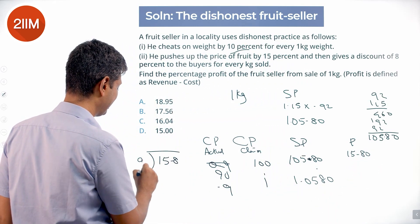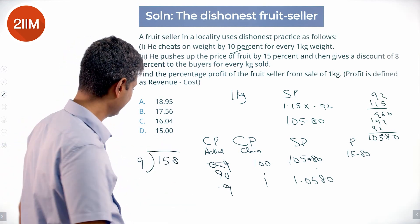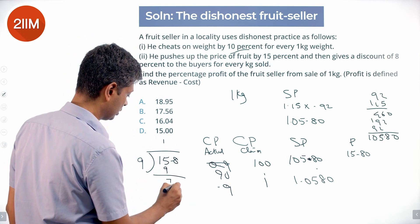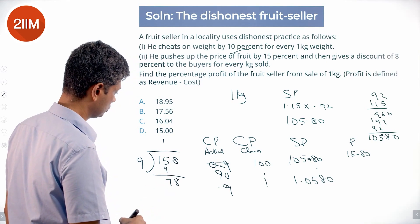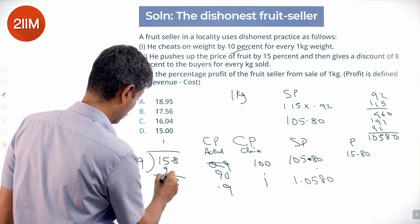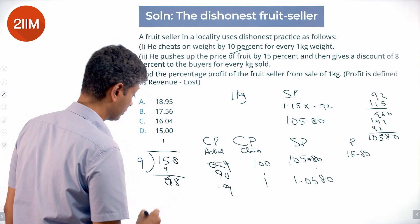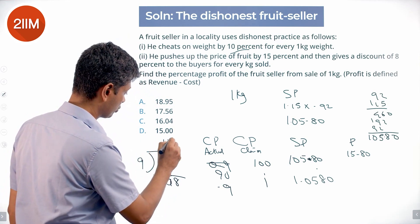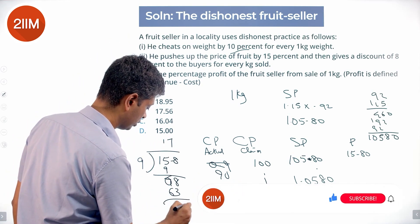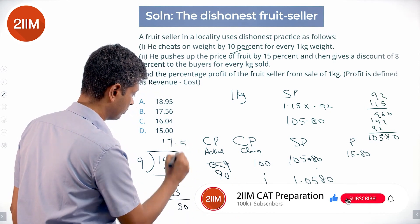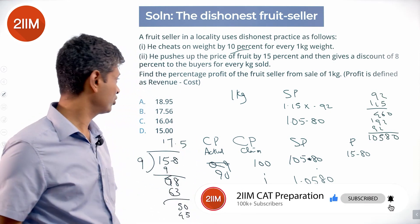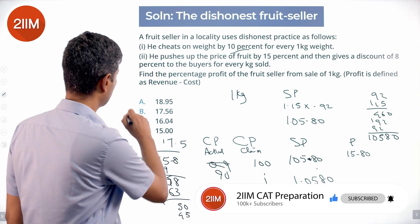Profit percentage = 15.8 divided by 90, multiplied by 100. Working through the division: 15.8/90 × 100 ≈ 17.56%. So the profit is approximately 17 and a half percent.